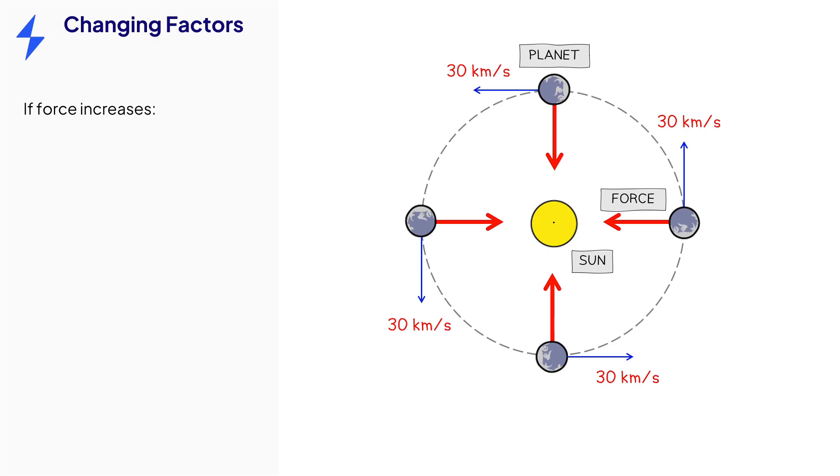You need to be familiar with how changing variables affects others in circular motion. If the centripetal force increases in size for an object with constant mass, the object's speed may increase while radius stays the same.